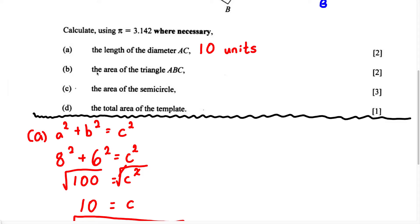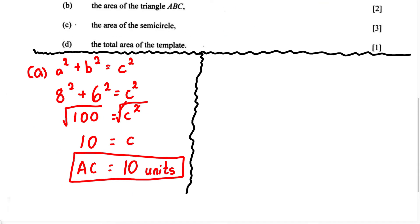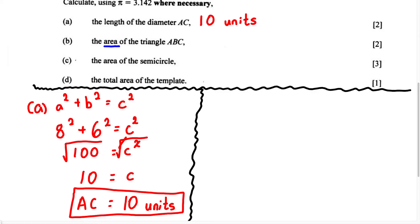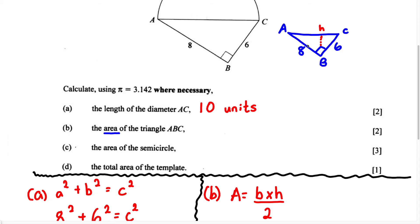Now let's do Part B: the area of triangle ABC. Anytime we see area, we use a formula. The formula for the area of a triangle is: area equals base multiplied by height, divided by 2. Sometimes written as half base times height — it's the same thing. The base of triangle ABC is 6 units.